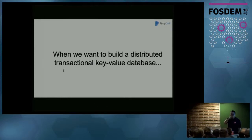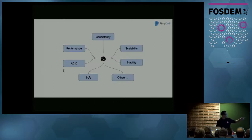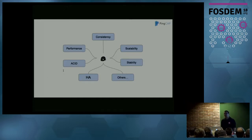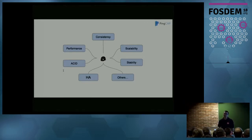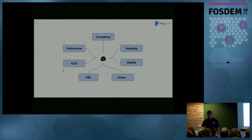When we want to build a distributed transactional key-value database, we found that we need to meet many, many problems and conquer many challenges. We must guarantee our database has data consistency, is scalable and stable, has high performance and high reliability. Of course, we must also make our database follow ACID compliance, and there are many other problems we need to conquer. This is our nightmare.